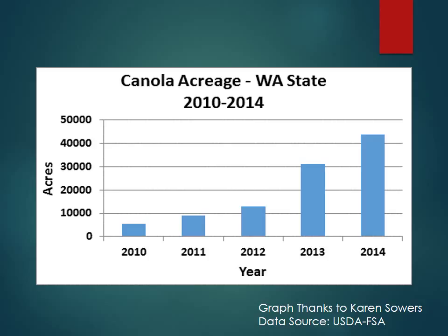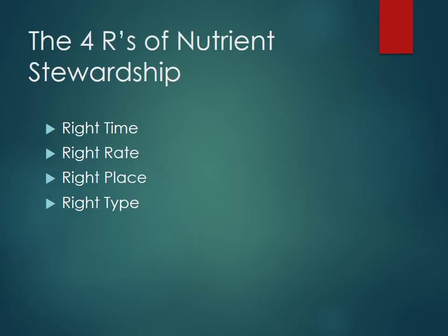Specifically, some of the work done at Washington State University is focused around making fertility plans. When we talk about fertility plans we immediately go to the four R's of nutrient stewardship. These are the right time, the right rate, the right place, and the right type. Today I'm going to focus on talking about the right place.